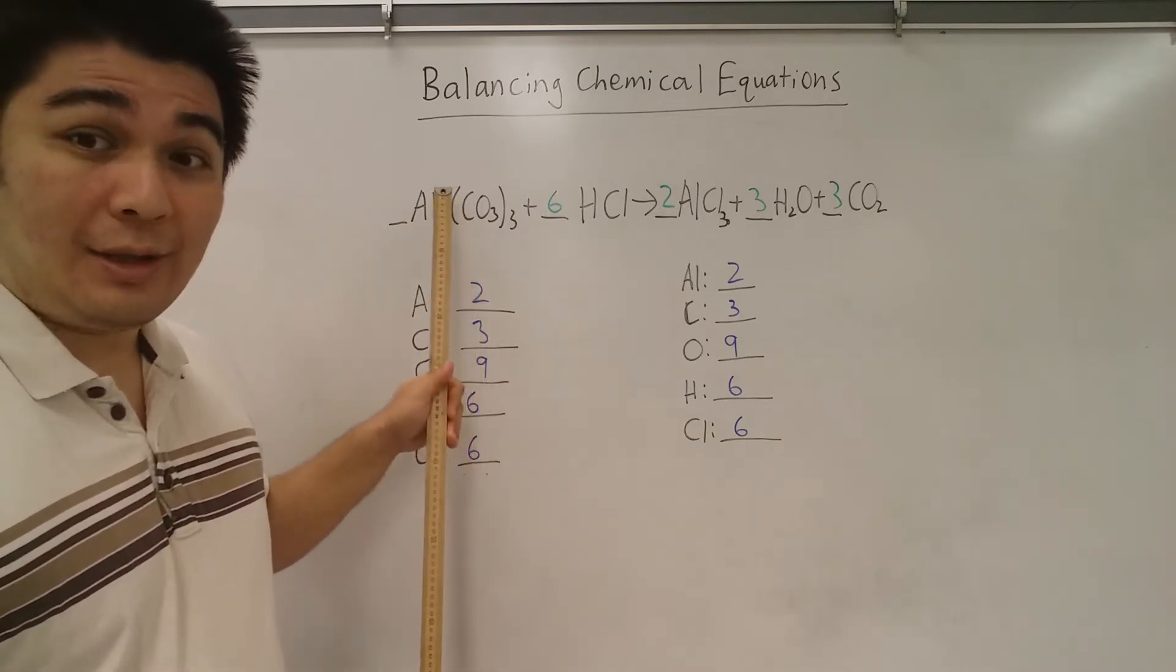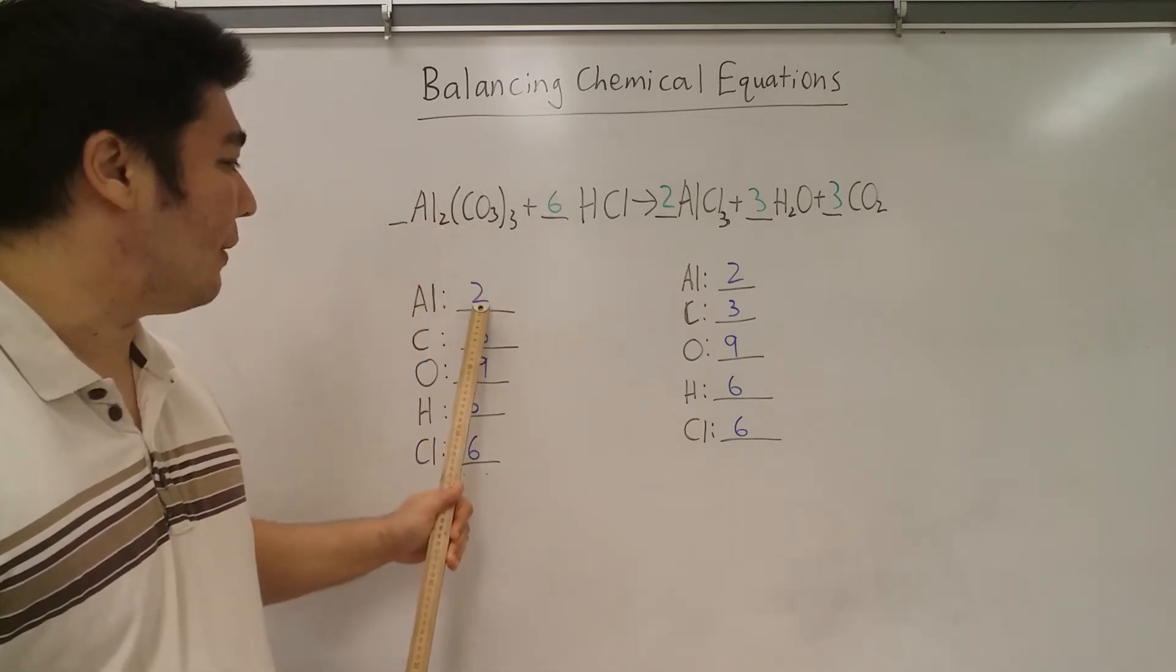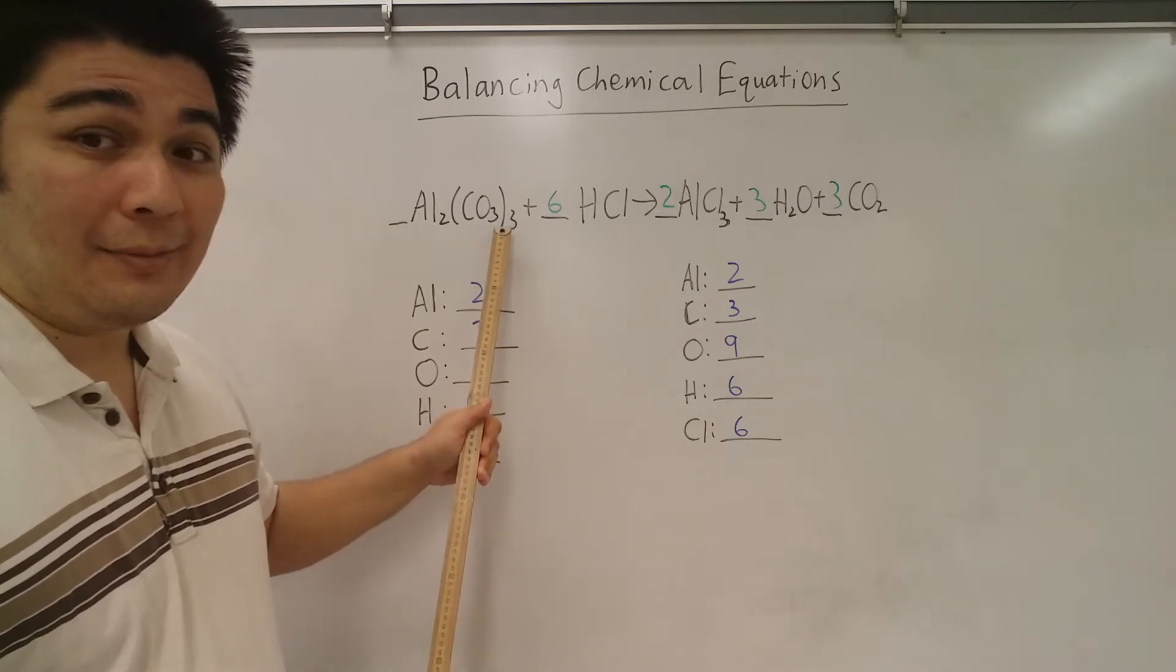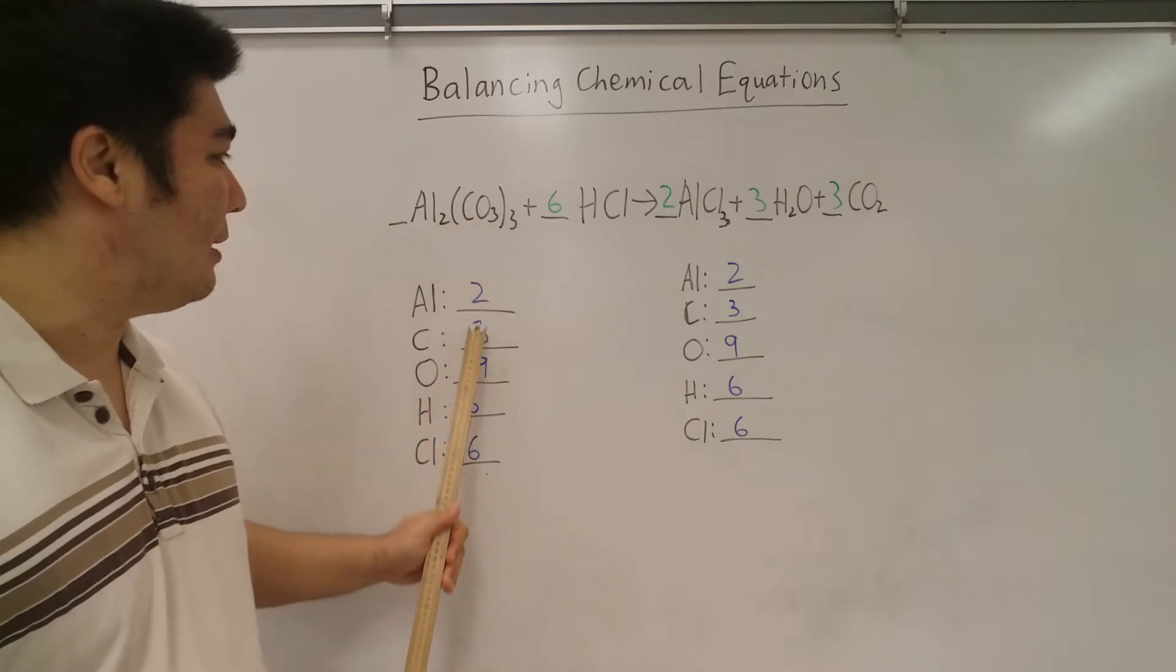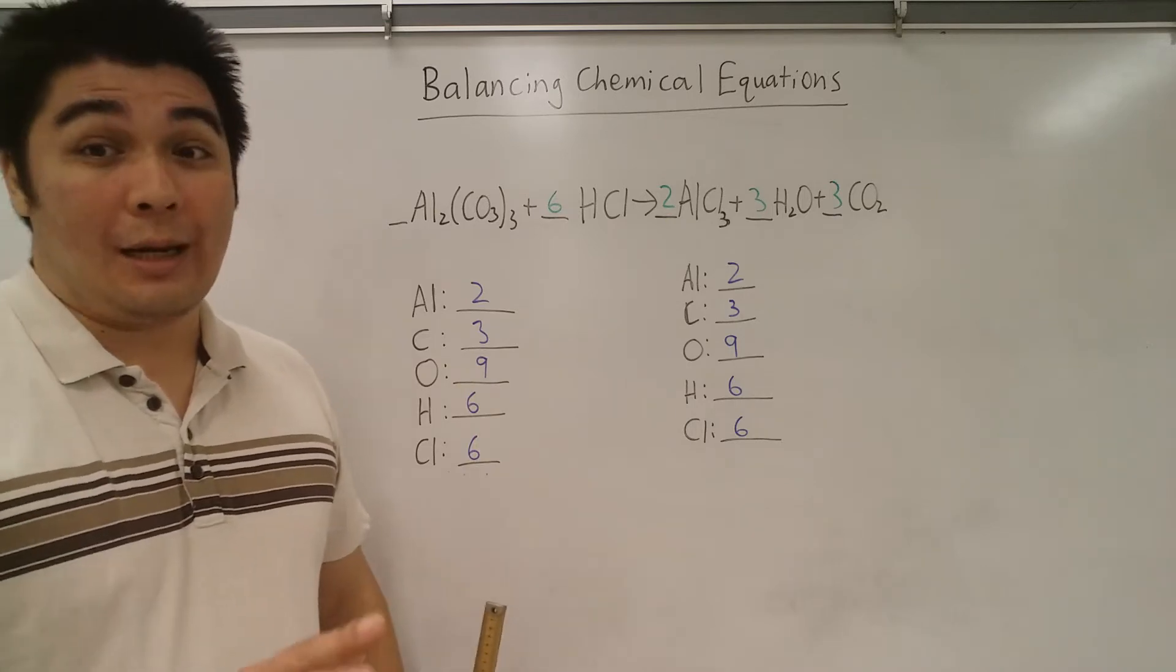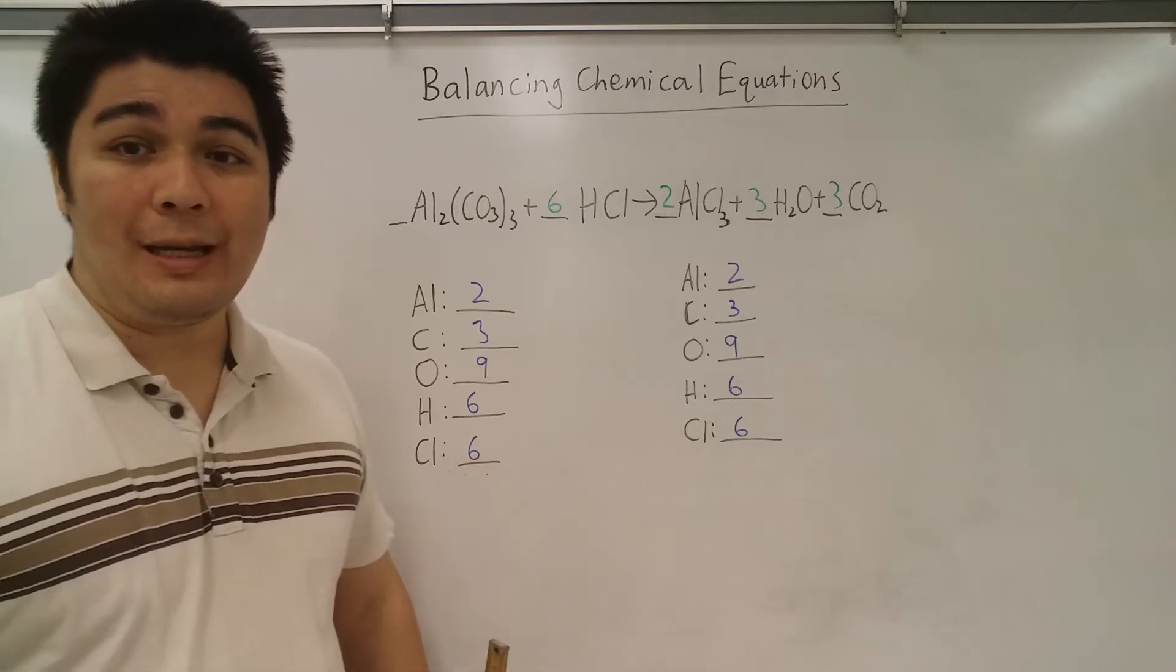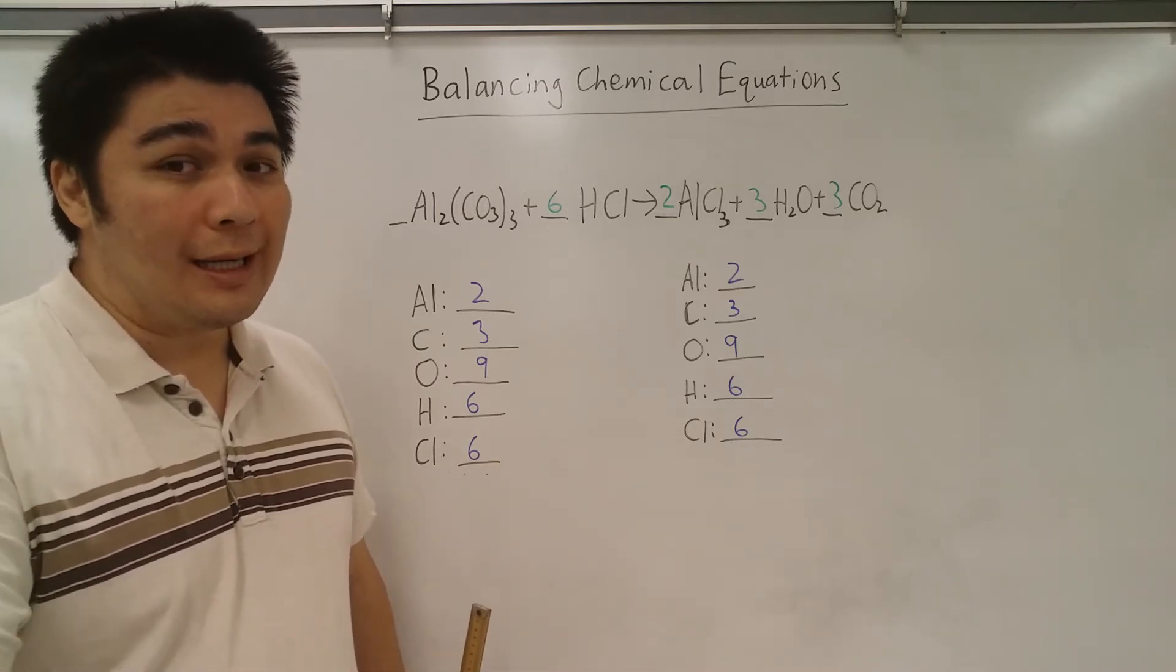So then I have to write down everything from here: aluminum has two, so I write two. There's three carbonate ions, so that means there's three carbons and then three times three or nine oxygens. I don't know quite yet how many hydrogens and chlorines there are going to be, so I'm going to hold off on that.